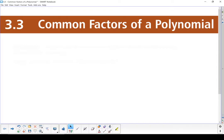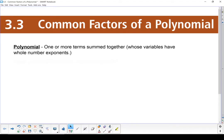3.3 Common factors of a polynomial. Now before we get too far into this, I want to make sure we understand a couple of terms. First one, polynomial. That's one or more terms summed together, and the variables have to have whole number exponents. The important part is it's one or more terms and they are summed together.